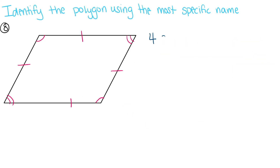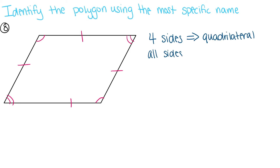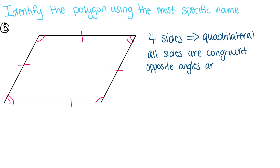And for our last example, we have another four-sided polygon, so it's a quadrilateral. All four sides are congruent and opposite angles are congruent. So that means this must be a rhombus.